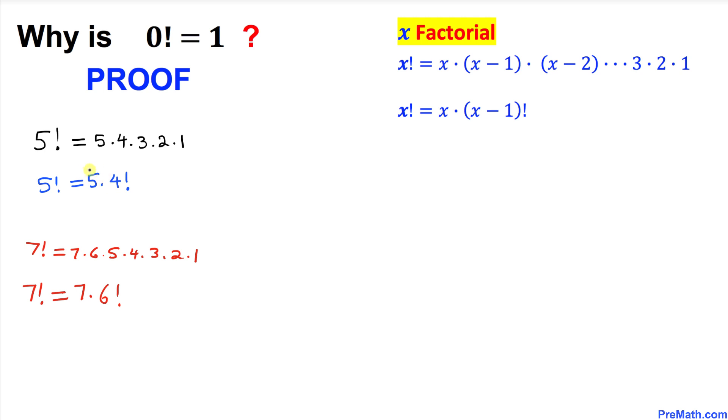So therefore based on these calculations that we did, these observations, we can generalize this thing as x factorial equal to x times x minus 1 factorial. Now I want to isolate this part.